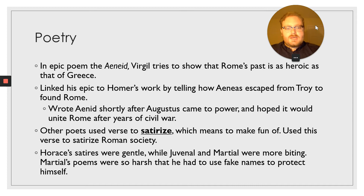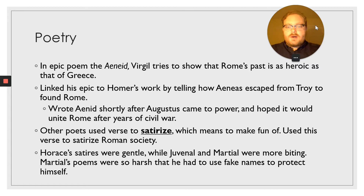After years of civil war, when Augustus came to power, Virgil hoped that the Aeneid — which united both Greek and Roman ideas together — would help to unite Rome. Other poets used verse to satirize Roman society. To satirize means to make fun of — so these poets used verse to make fun of Roman society.